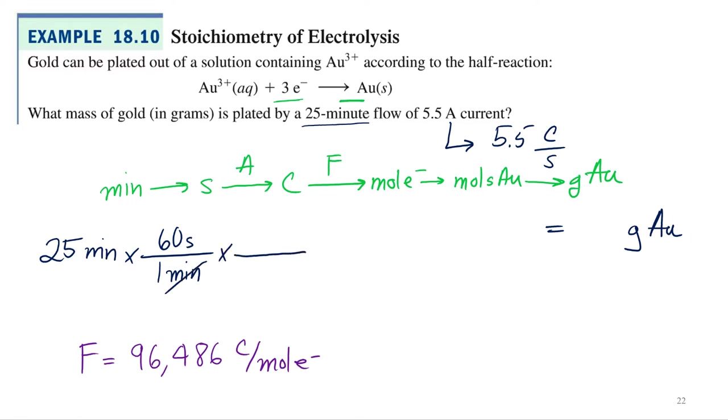So minutes cancel out. Now I'm going to use my current to convert to coulombs. So 5.5 coulombs per second. Seconds cancel out. And now I'll use my new handy-dandy Faraday's constant 96,486 coulombs in one mole of electrons.